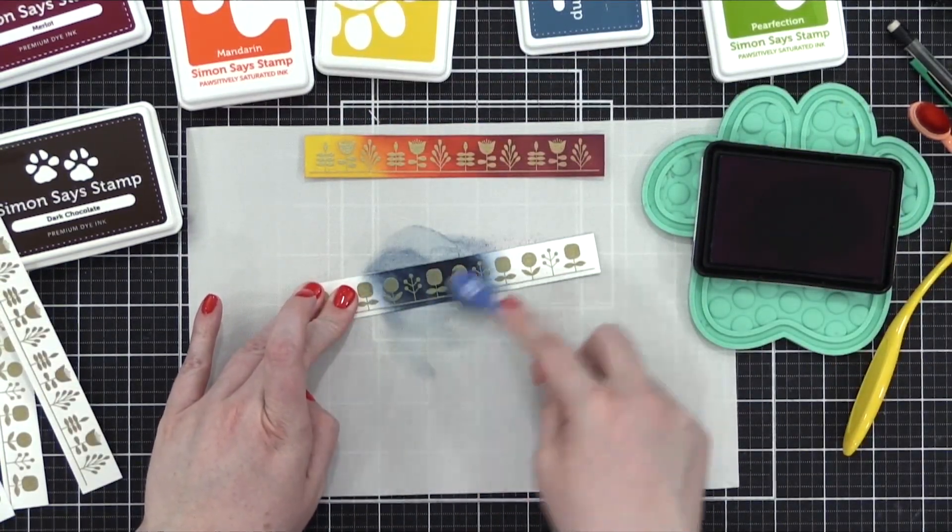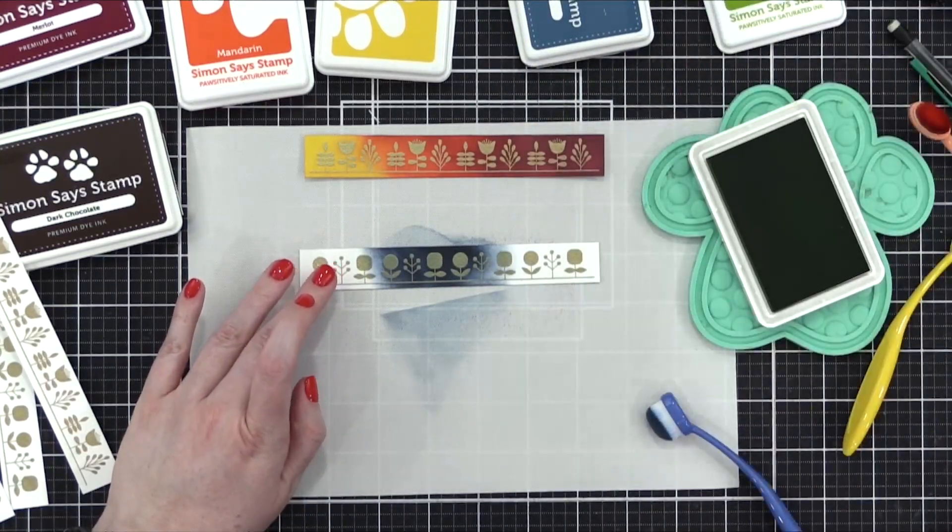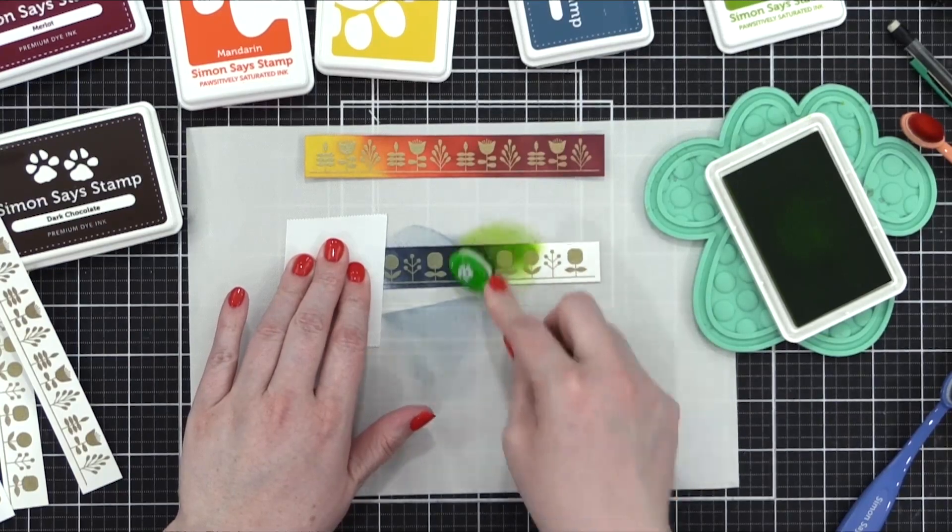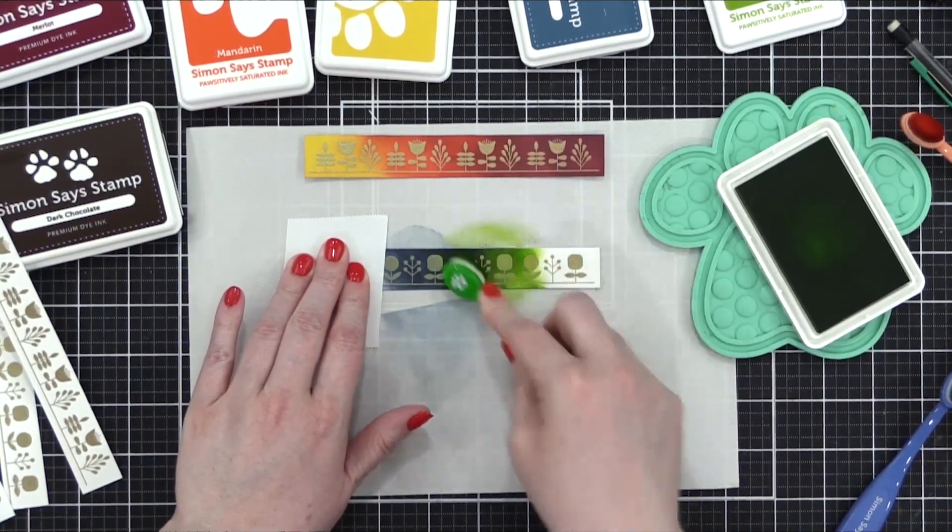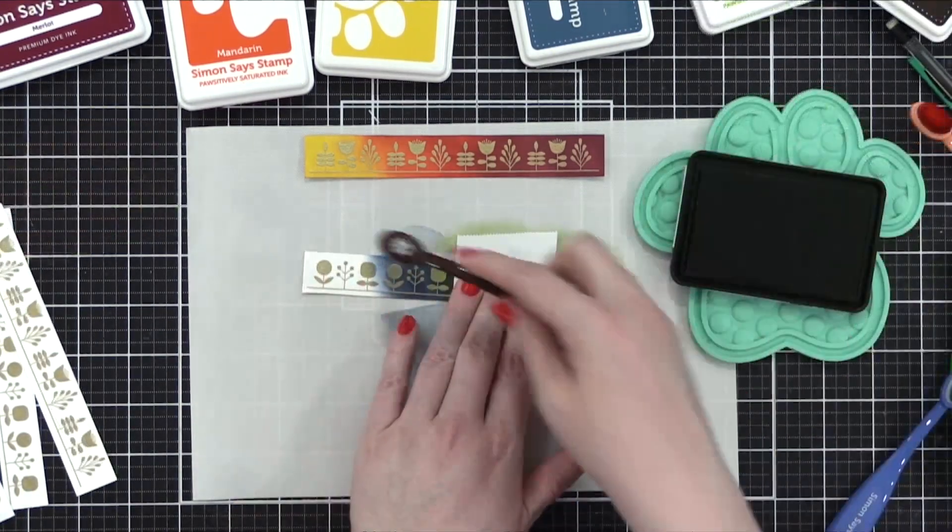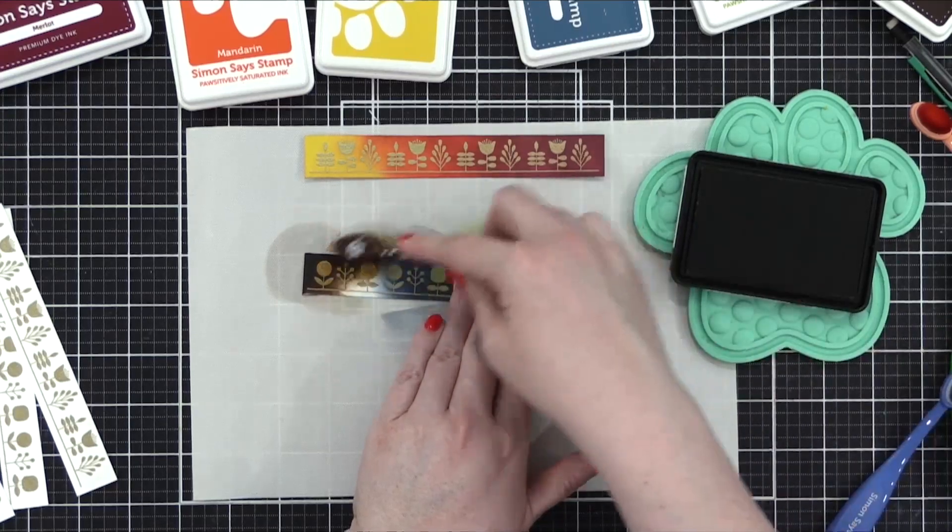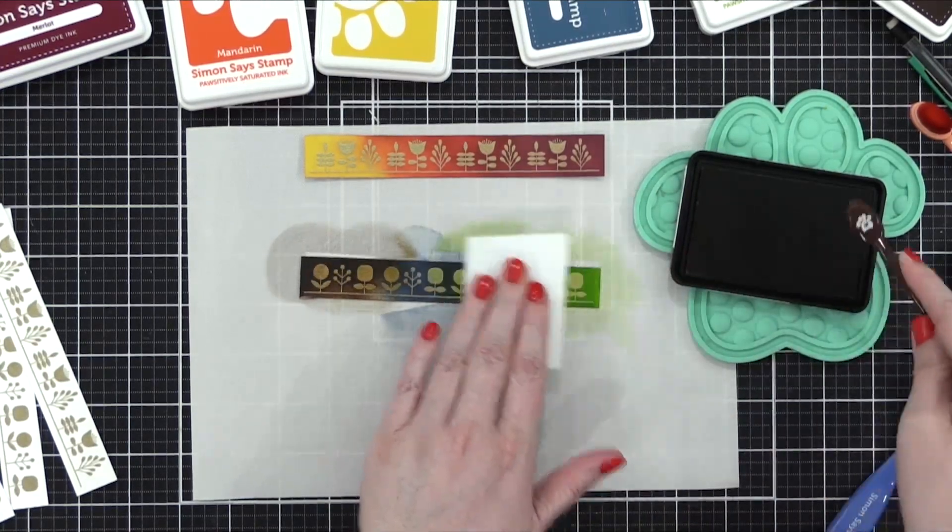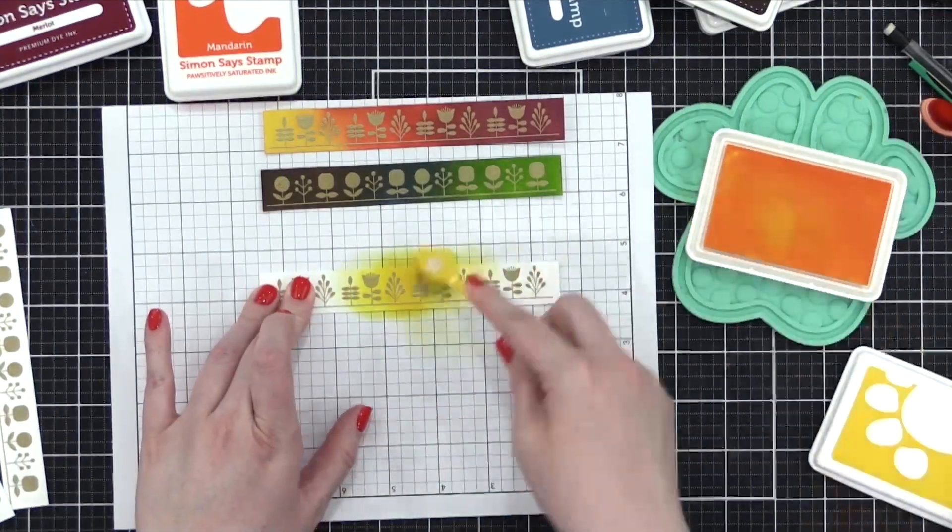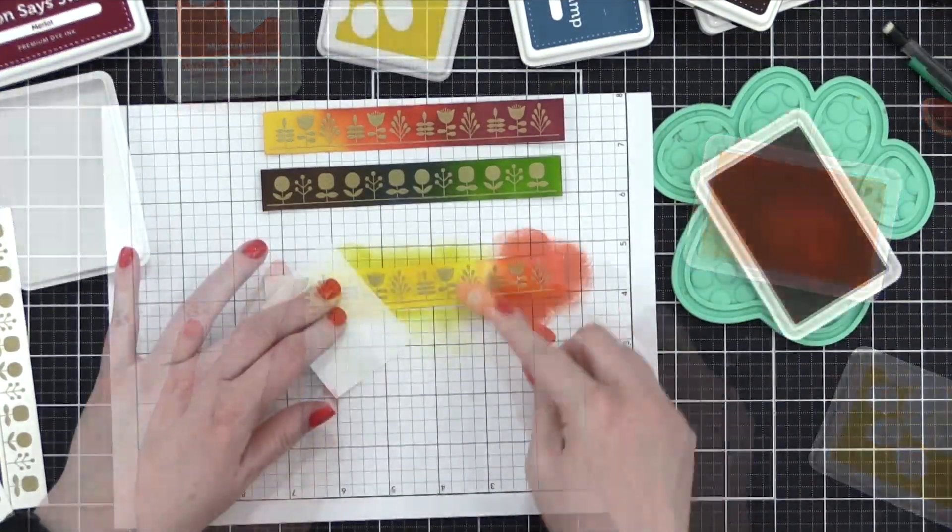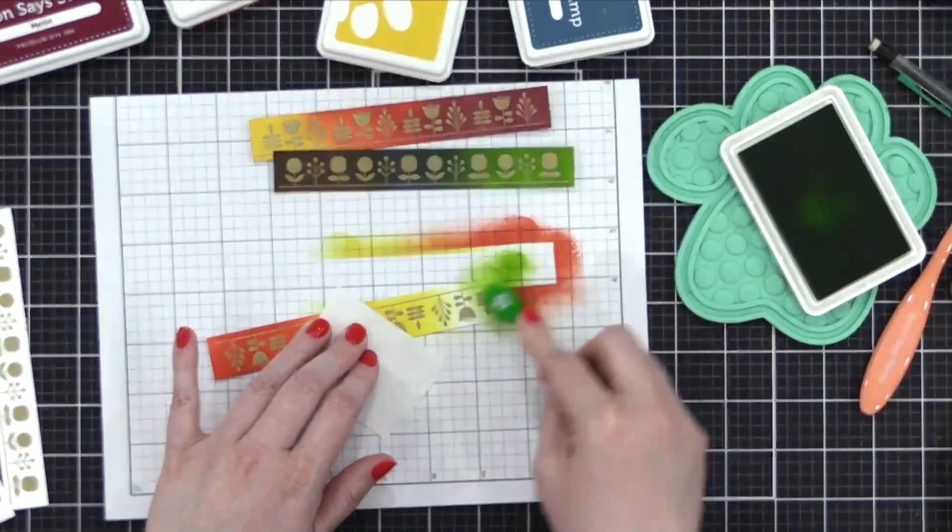Then I moved on to the color Soft Navy, and I put that in the center, and then I blended the color Perfection off to the right. I'm going to use a nice brown shade, which is Dark Chocolate, over on that far left side. As I blend each one of these rows, I'm going to put the ones that I've completed right above. This is to make sure that I have a variety of color on each section, the middle or the left or the right.